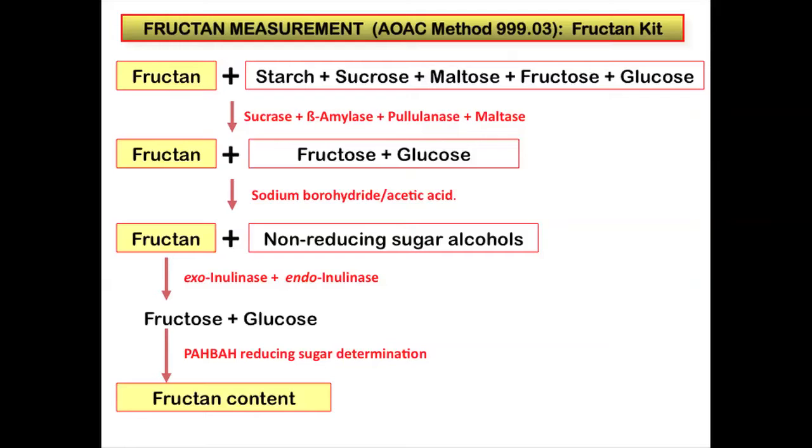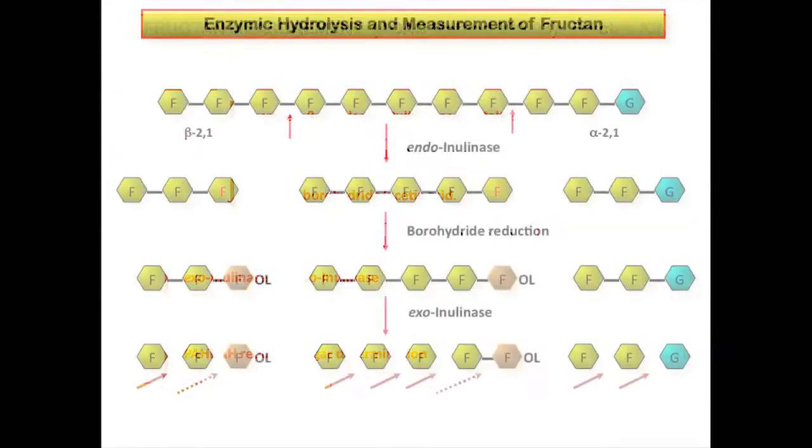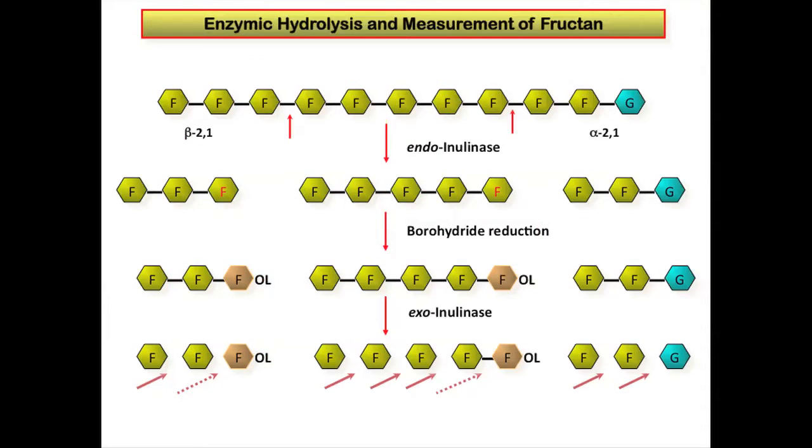These are then measured with the PAHBAH reducing sugar method to give the fructan content. A problem in applying AOAC method 999.03 to the measurement of fructan for partially degraded fructan samples is shown in this slide. In hydrolyzing the fructan to oligosaccharides with endoinulinase, reducing end groups are exposed. These reducing end groups will be reduced to sugar alcohols by borohydride in the borohydride reduction step in the assay procedure.